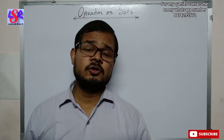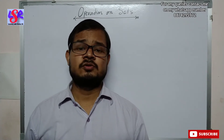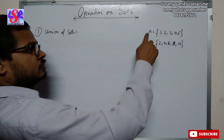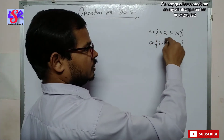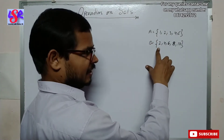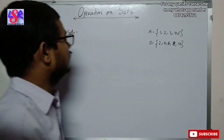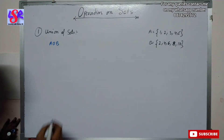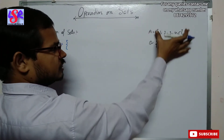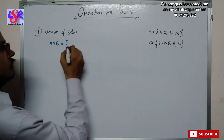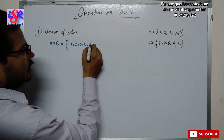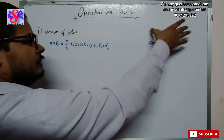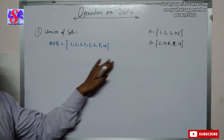Now we are going to study various terms used in this chapter. The first one is union of sets. We have two sets A and B for illustration. Set A has elements {1, 2, 3, 4, 5} and Set B has even elements {2, 4, 6, 8, 10}. For A union B, we write a 'U' symbol. This is the combination of both sets — all elements of both sets are written without repeating any. So we write 1, 2, 3, 4, 5, then 6, 8, and 10.